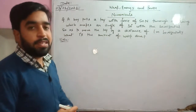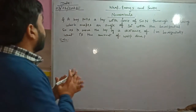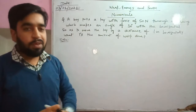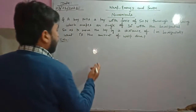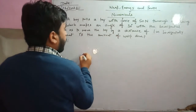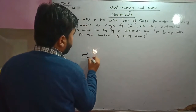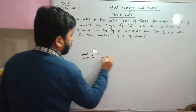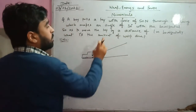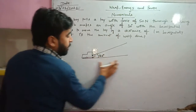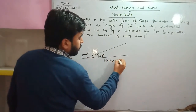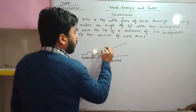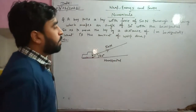The first numerical is written on the board. In physics, when solving numericals it is very important to draw the diagram. A boy pulls a toy car with a force of 50 newton through a string. The string makes an angle of 30 degrees with the horizontal, and the force applied by the boy is 50 newton.